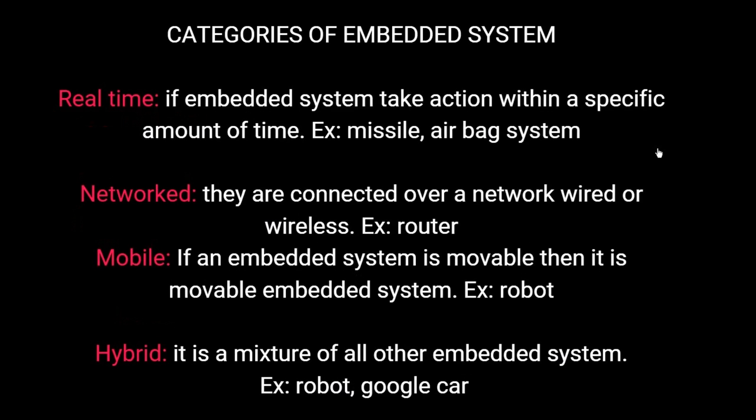Real-time embedded systems take action within a specific amount of time, like a missile or airbag system. Network embedded systems are connected over wired or wireless networks, like a router. Mobile embedded systems are movable, like a robot. A hybrid system is a mixture of all the other embedded systems, like a robot or Google car.